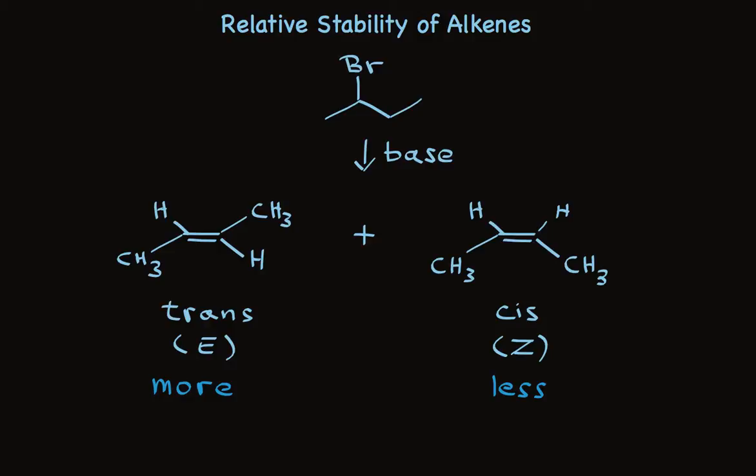Well, it's because the trans is more stable. And that is generally true about alkenes. The cis is significantly less stable than the trans.